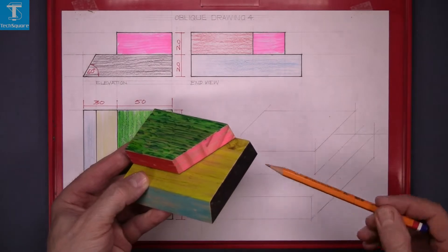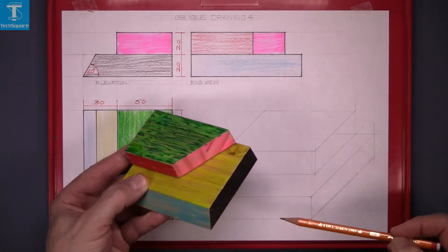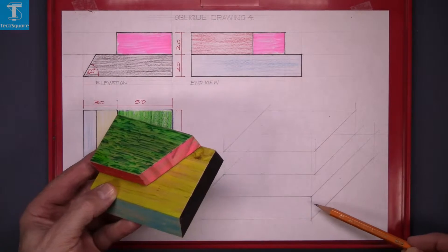What we want to do now is get a drawing with this view, sloped back and this angle here.